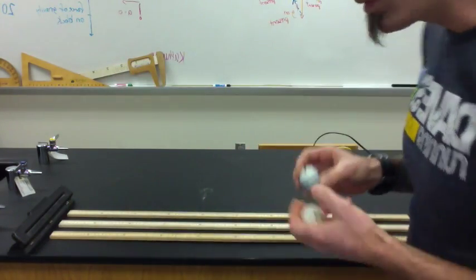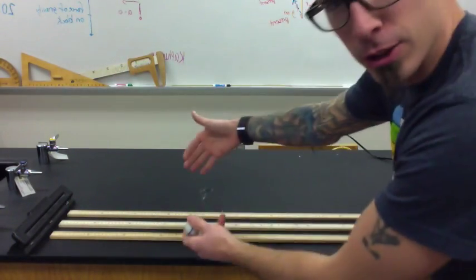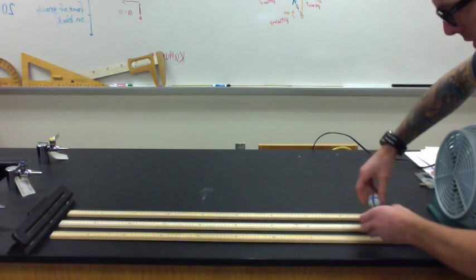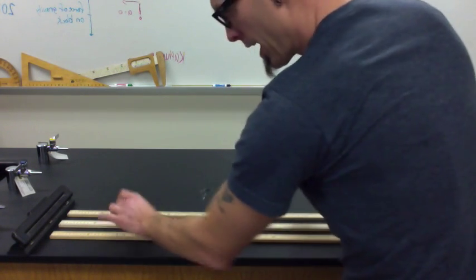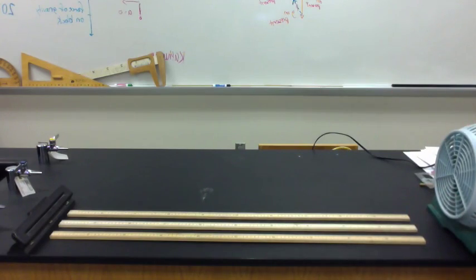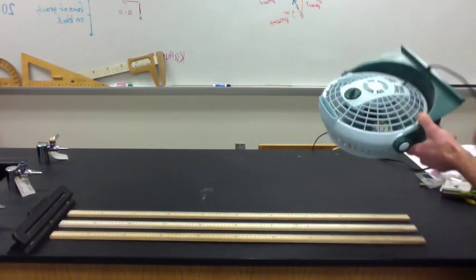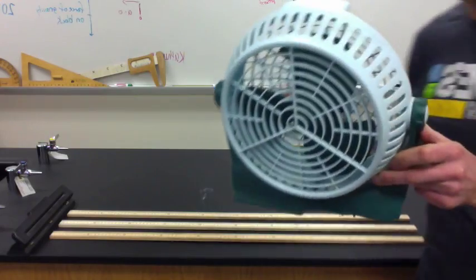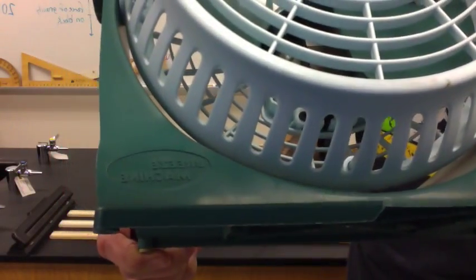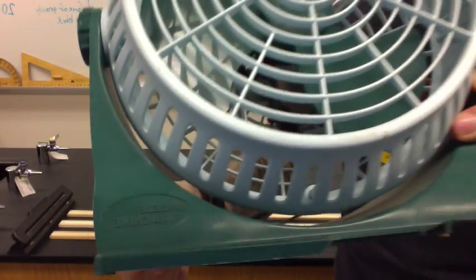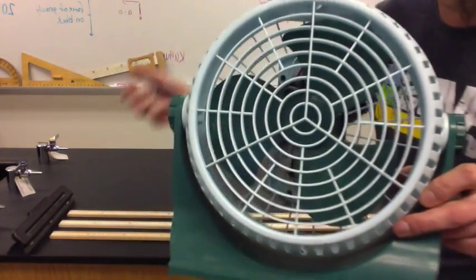So what I have here is a track. Look at this, where the ping pong ball can roll down the track. Isn't that fantastic? And then I have a fan. It's not just any fan. This is the Breeze Machine. Of course, it'll probably be backward on the video there. But this is the Breeze Machine. This is the official physics fan.